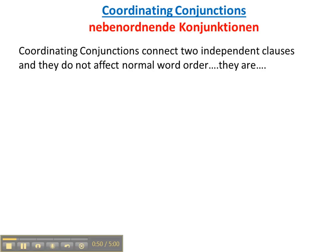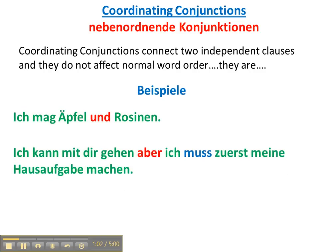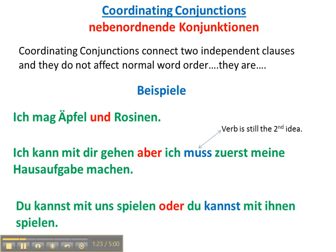The coordinating conjunctions connect two clauses and they don't affect the word order of either clause. For example: Ich mag Äpfel und Rosinen — I like apples and raisins. Ich kann mit der gehen, aber ich muss zuerst meine Hausaufgabe machen. The verb muss stays right next to the subject ich in the second clause. Du kannst mit uns spielen oder du kannst mit ihnen spielen — you can play with us or you can play with them. The verb is still the second idea in the clause following a coordinating conjunction.